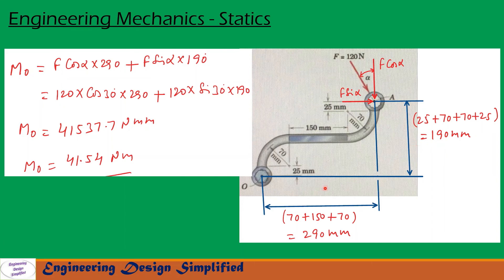Taking moments about O due to these two force components: M_O equals F cos alpha into 290 plus F sin alpha into 190. The positive sign is used because both force components create clockwise moments about O. Substituting alpha equal to 30 degrees and simplifying, we get M_O equal to 41,537.7 Newton-millimeter.